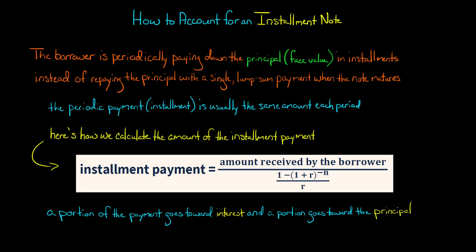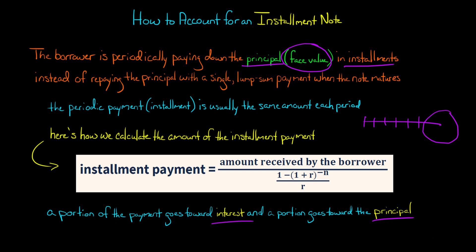In this video, I'm going to show you how to account for an installment note. An installment note is different from a typical note in that the borrower is paying down the principal — the face value of the note — in installments instead of repaying the entire principal at the end when it matures. The borrower makes payments every month, every six months, every quarter, and a portion of the payments goes toward interest, while the rest goes toward reducing the principal of the loan. So they don't have a huge lump sum to repay at maturity — they pay a little bit every period.